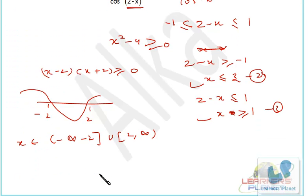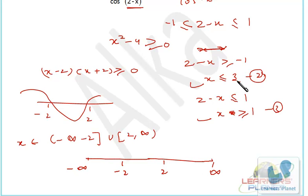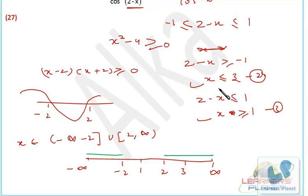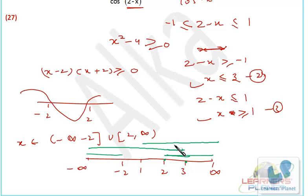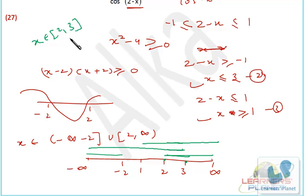Now we find the intersection of all three conditions on the number line. We have minus infinity to minus 2 union 2 to infinity from the first condition, x ≤ 3, and x ≥ 1. Looking at the number line with points minus 2, 1, 2, 3, we can see all three conditions are satisfied from 2 to 3. So the domain of this function is [2, 3].